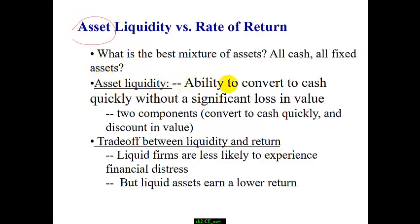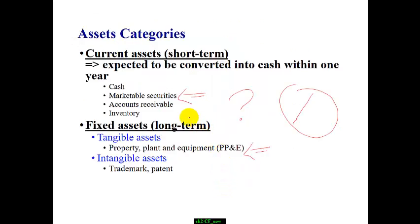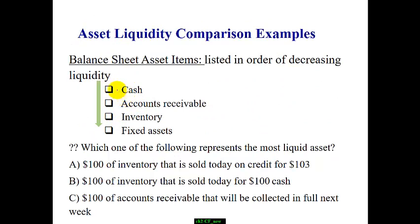Asset liquidity refers to how quickly you can convert an asset into cash — number one, convert to cash quickly; number two, without having to sacrifice price. A house is one type of illiquid asset. During financial crisis, it is very difficult to sell a house quickly without experiencing a discount. Liquid assets will help us pull over financial distress, but there is a downside: if all assets are in cash, we do not make much return. So we have to figure out the best balance between liquid and illiquid assets. Assets are listed in terms of most liquid to least liquid.